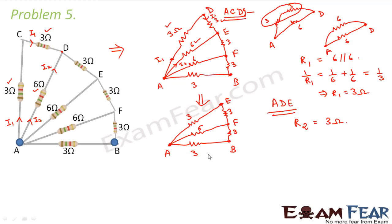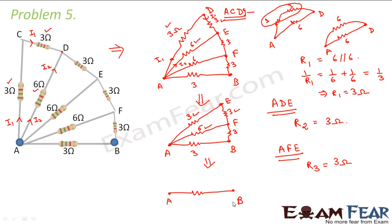The circuit becomes even simpler. Now we look at part AFE. The 3 ohm and 3 ohm are again in series, and their combination is in parallel with 6 ohms. So the equivalent resistance of AFE, R3, again comes out to be 3 ohms. We simplify the circuit further: from A there is 3 ohms to point F, and instead of drawing AFE we place R3 = 3 ohms.